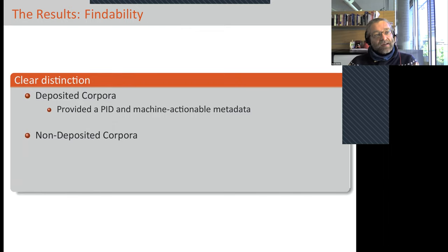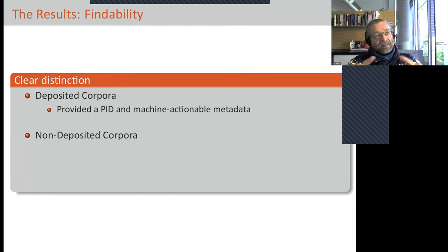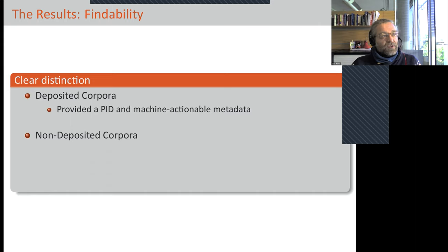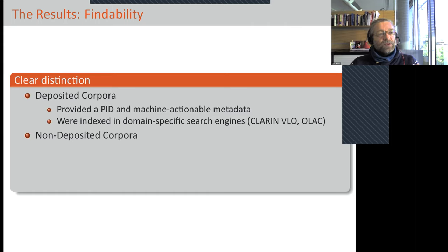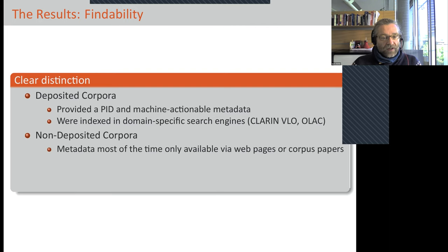Machine-actionable means it's not only written in plain text on the website, but there is hidden data — not visible to humans but readable by machines. Deposited corpora are also usually indexed by domain-specific search engines. Once you deposit a corpus in one of those infrastructures, it gets picked up by the search engines, and often making it available in one infrastructure means it will be picked up by all the others.